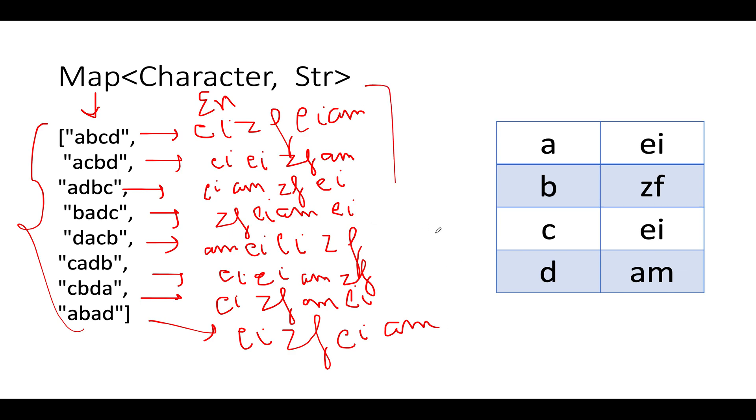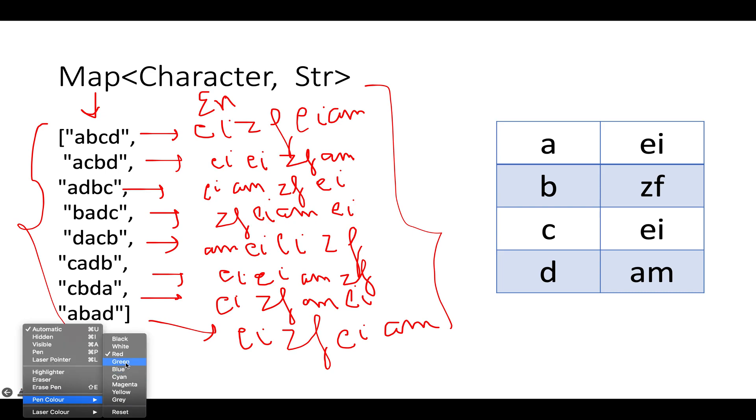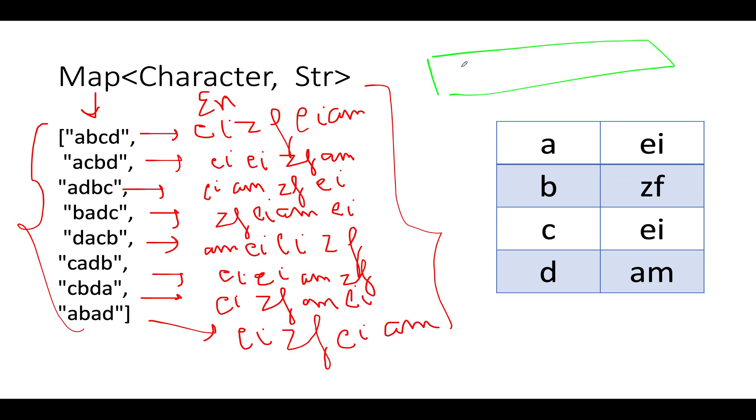Now what will I do? I will store all these encrypted strings in a map and I want to store how many instances each of these encrypted strings occur. So let's create a map which will actually store encrypted string comma its frequency as per dictionary.